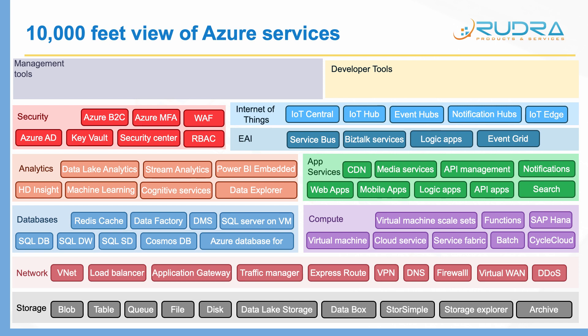And the next thing is Azure B2C. In case you want a cloud-based identity management solution for your consumer-oriented applications, then you can go for Azure B2C. Using Azure B2C, you can actually manage millions of identities. And the next thing is Azure multi-factor authentication. And finally, web application firewall — mainly this web application firewall is part of application gateway, more like an add-on, but you can use it to front-end your web application. The web application firewall will protect from common web-based attacks like XSS attack or SQL injection attack, etc.